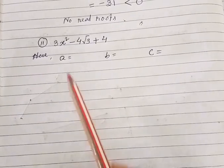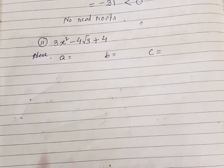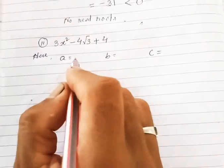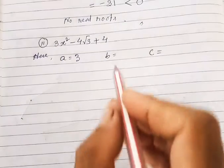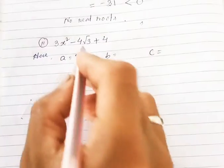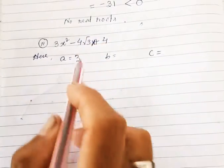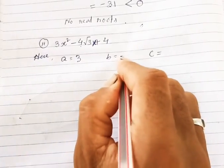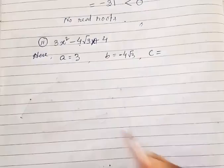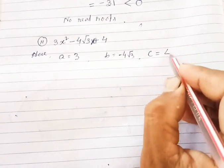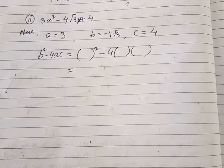Now come to the next equation. The second equation is 3x² - 4√3 x + 4 = 0. Here a = 3, b = -4√3.